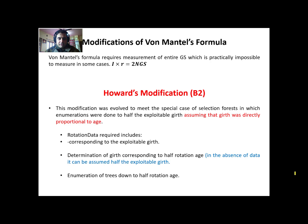Howard came up with a modification because in Von Mantel's formula, to get the yield we enumerate growing stock down to the lowest possible diameter or age. That means we go for complete enumeration.